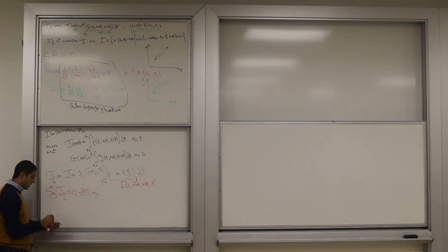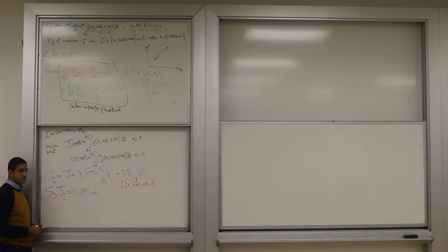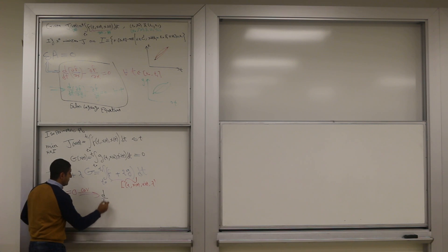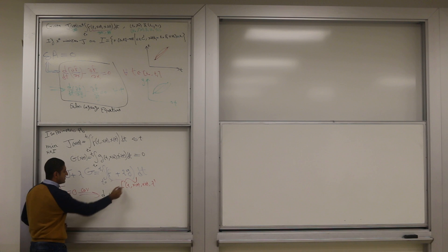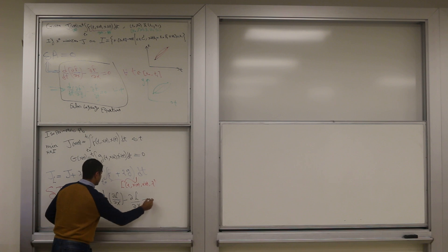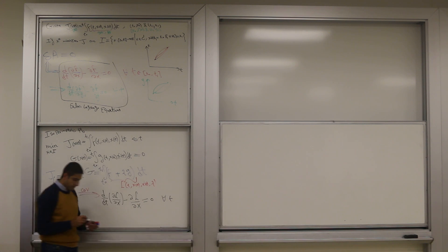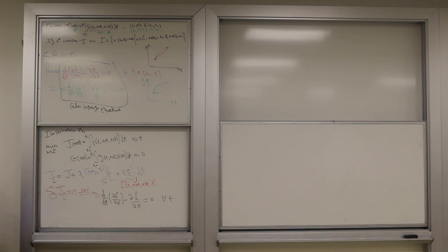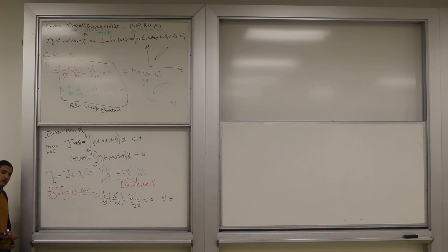J_L is an integral, and I know how to handle it using calculus of variations. The first variation of J_L equals zero gives: d/dt of ∂L/∂x-dot minus ∂L/∂x equals zero for all time — a differential equation. These things will be on the next homework and of course on the final.